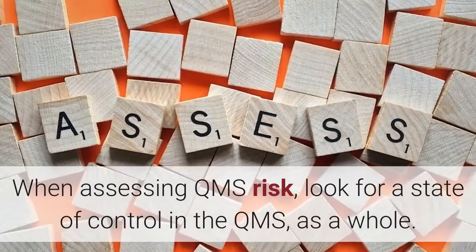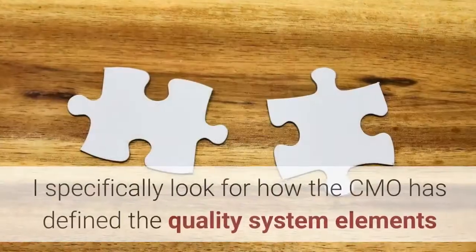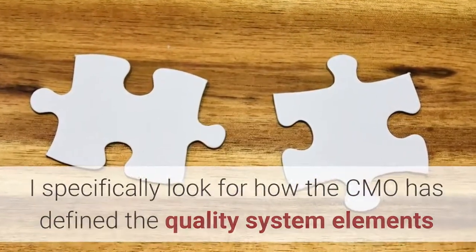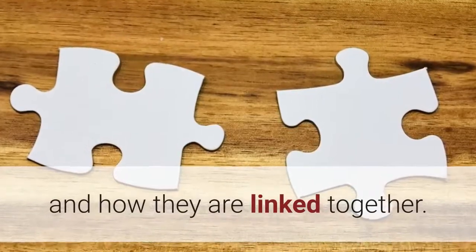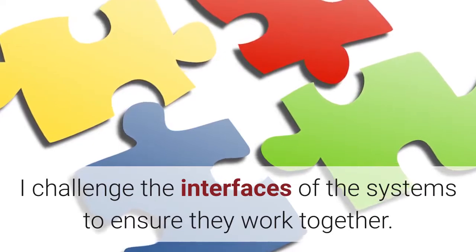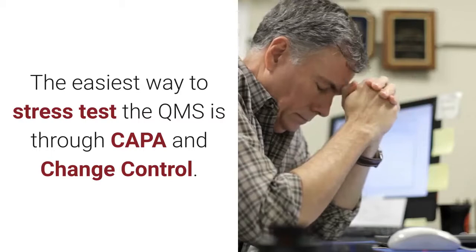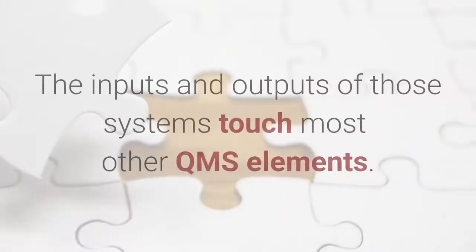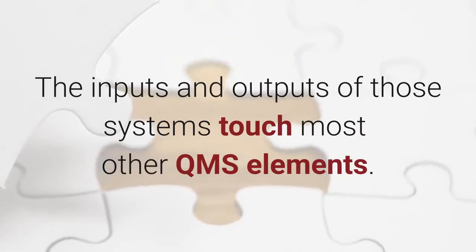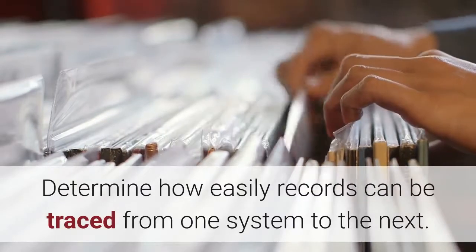When assessing QMS risk, look for a state of control in the QMS as a whole. I specifically look for how the CMO has defined the quality system elements and how they are linked together. I challenge the interfaces of the system to ensure they work together. The easiest way to stress test the QMS is through CAPA and change control. The inputs and outputs of those systems touch most other QMS elements. Determine how easily records can be traced from one system to the next.